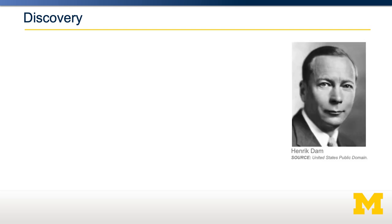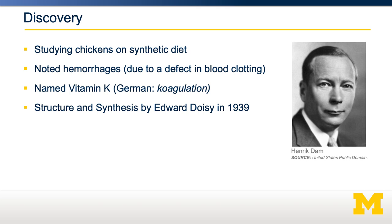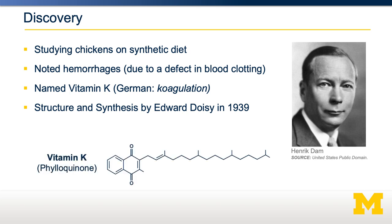Henrik Dam, shown here on the right, was doing a study on chickens on a particular synthetic diet. He noticed that on this particular diet there were hemorrhages, due to excessive bleeding caused by a defect in blood clotting. He then identified a particular substance which he named vitamin K after the German word for coagulation. The structure and synthesis of vitamin K was discovered by Edward Doisy in 1939, shown here on the bottom. When you added this substance back to the synthetic diet, the hemorrhages and the defects in clotting disappeared.